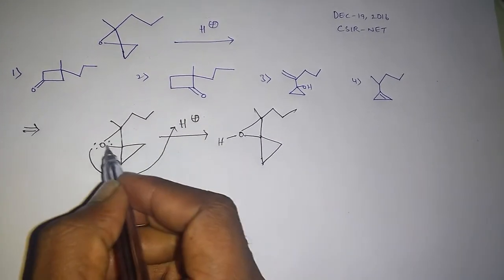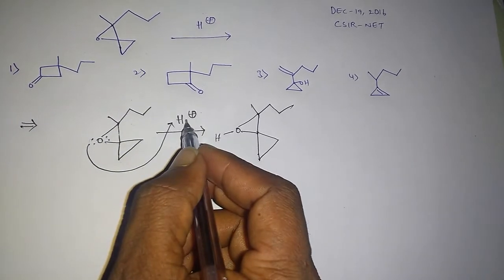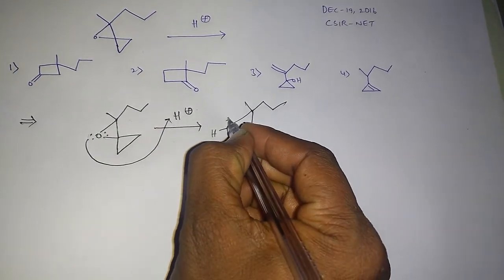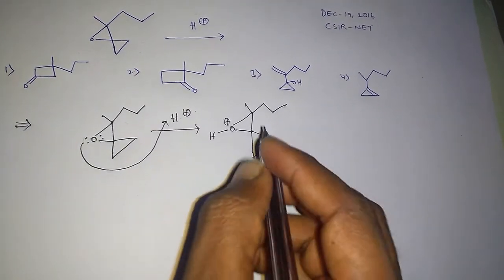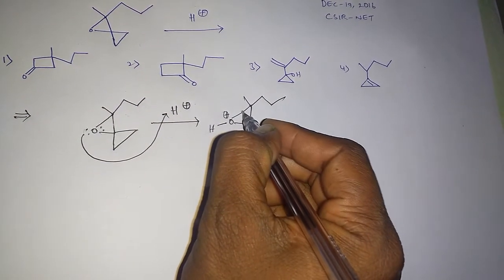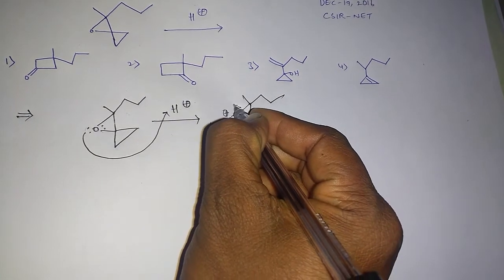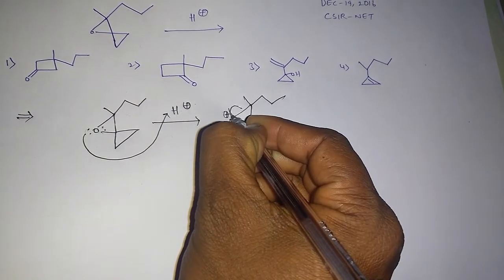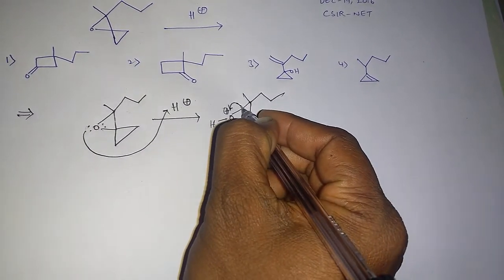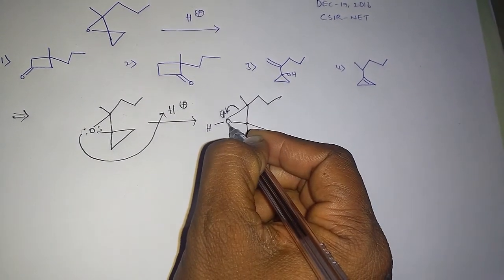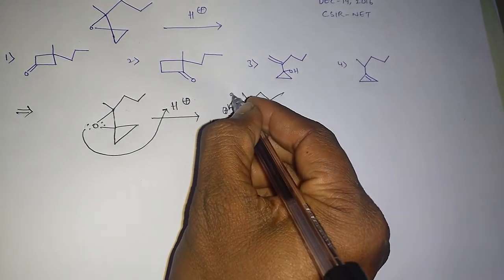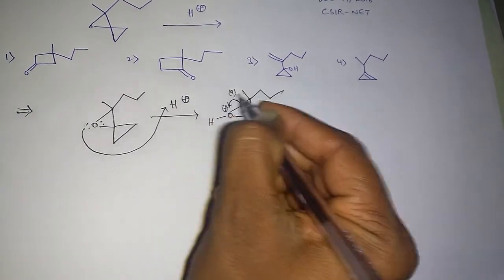Due to these lone pairs abstracting H plus, the oxygen gets partially positive charge on it. Then the bond breaks here to compensate this positive charge on that oxygen.